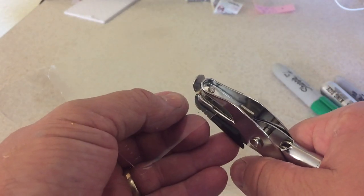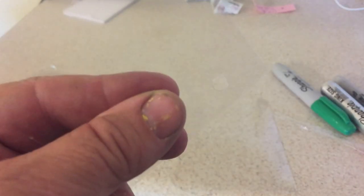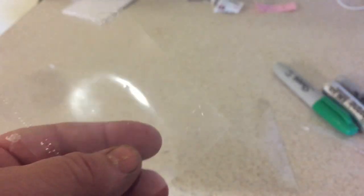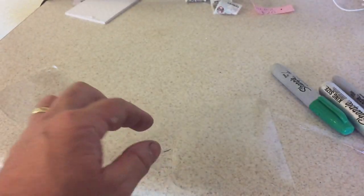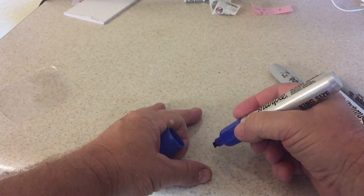Once you've got them cut out, you can use a hole punch and just mark one of the corners. That way, if you want to make a key ring or put something on there, you're able to do that. I just did that to show you what it is.